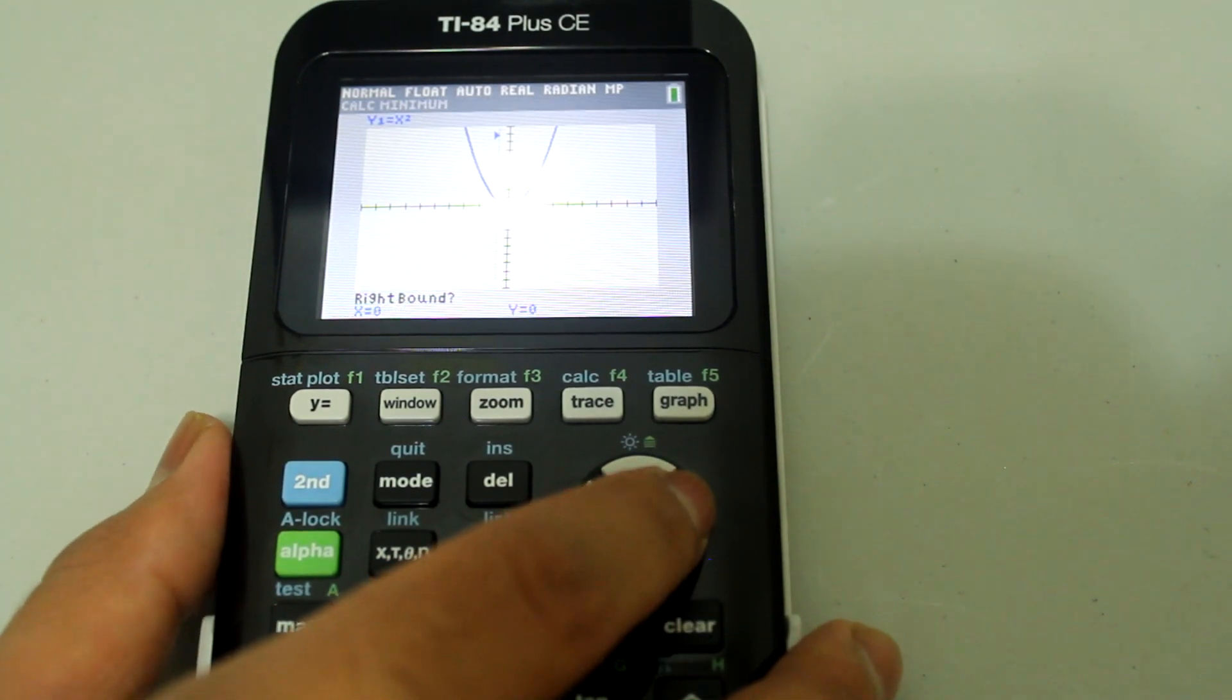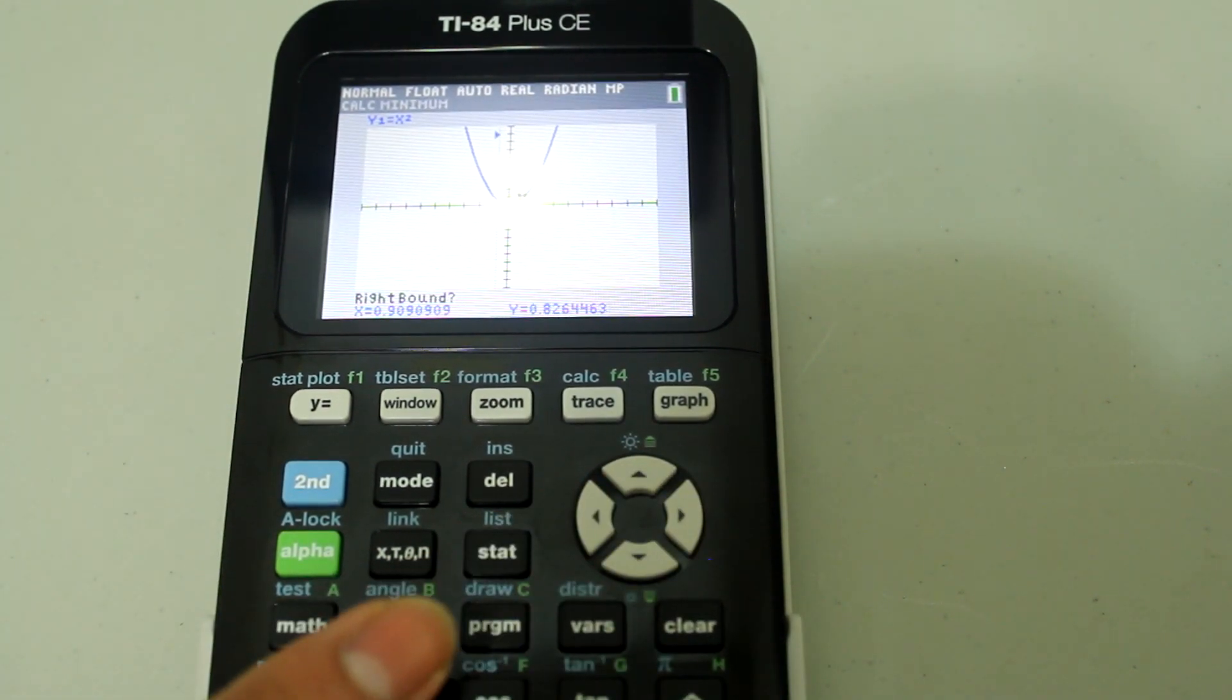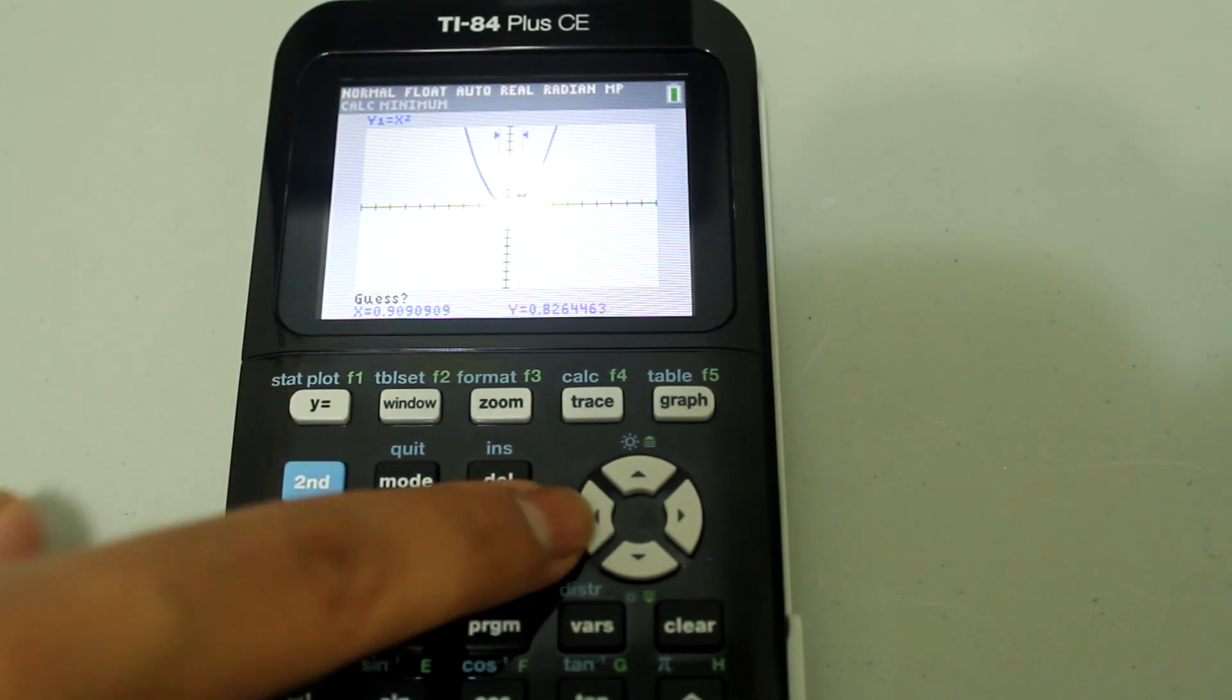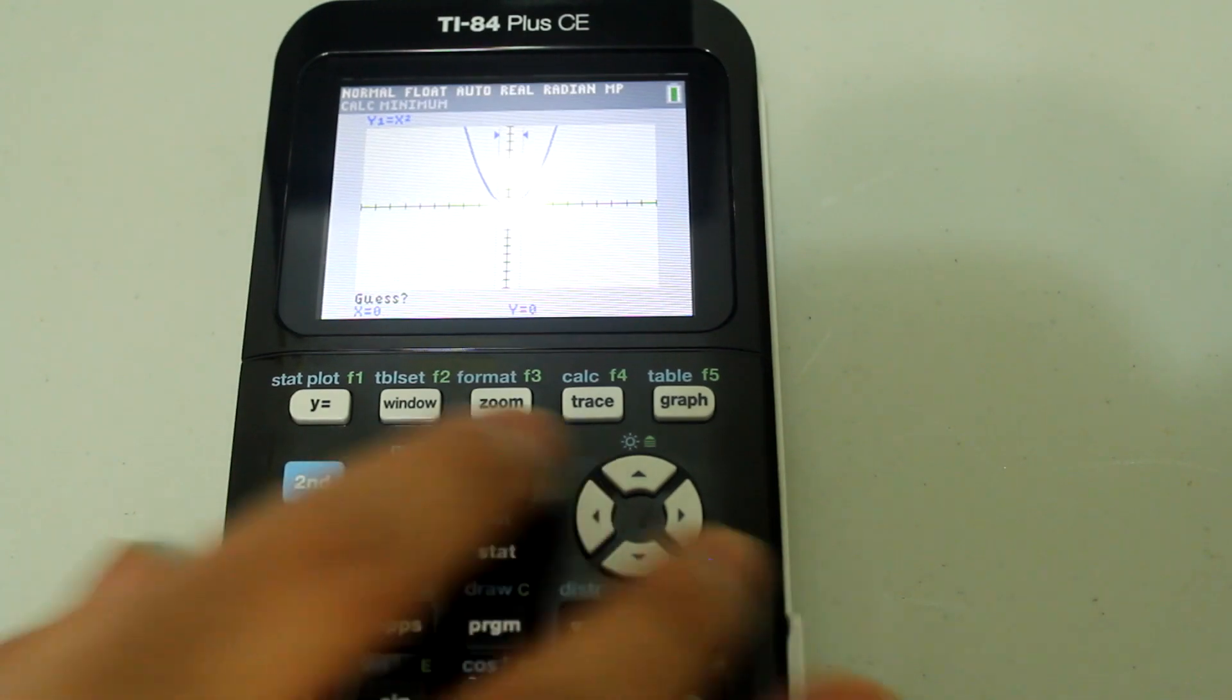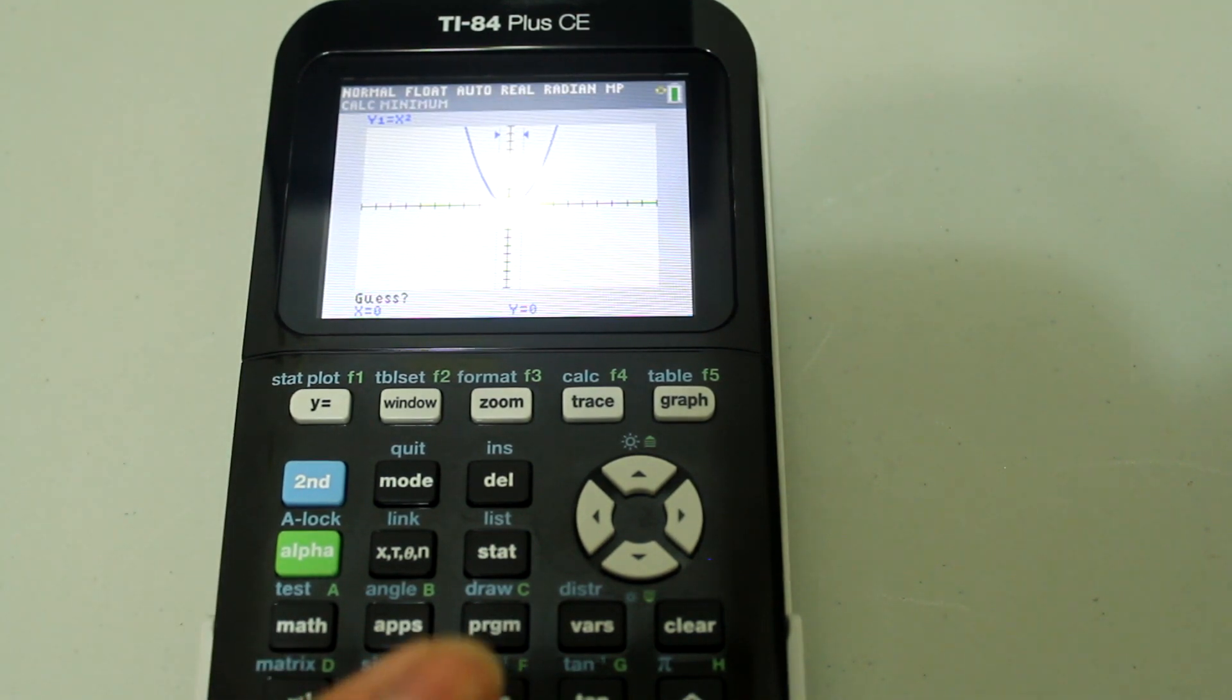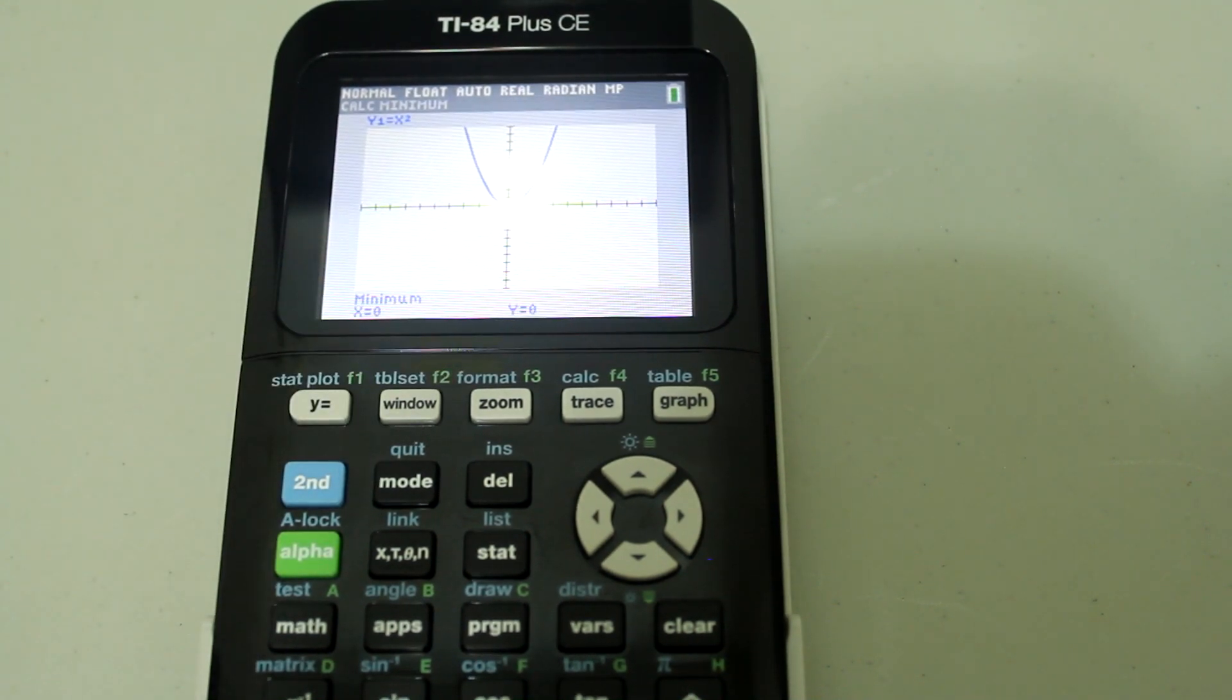And I want to go back down to 0, 0 and then go to the right of that a little bit and then hit enter. Now it says guess with a question mark so I go back down to 0, 0 now. My guess is that the minimum is at 0, 0. So that's where I want to put the cursor and then hit enter. Now it shows me that the minimum is at x equals 0 and y equals 0.